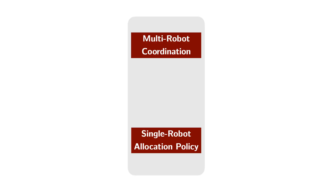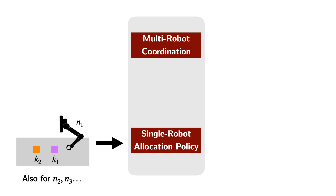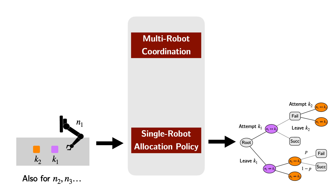Our hierarchical two-level algorithm proceeds as follows. At the lower level, it plans independently for each robot and subset of reachable tasks to decide the single robot allocation policy. It uses dynamic programming over policy tree search to reason about the probability of successful task completion within the time windows. For example, for robot N1 and objects K1 and K2, the tree encodes whether to attempt or to leave K1, and then attempt or leave K2, with some branch-dependent outcome probability.